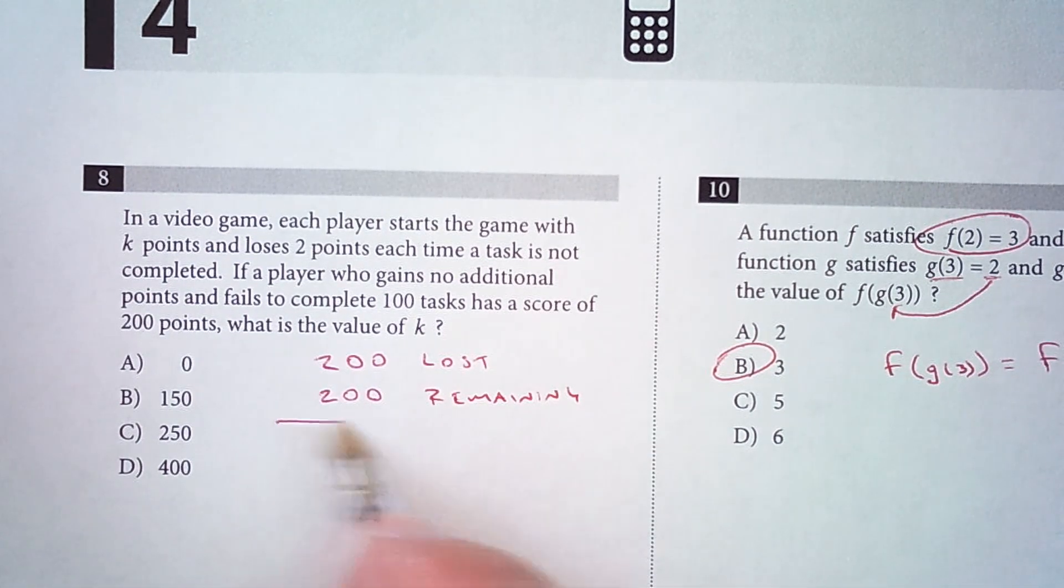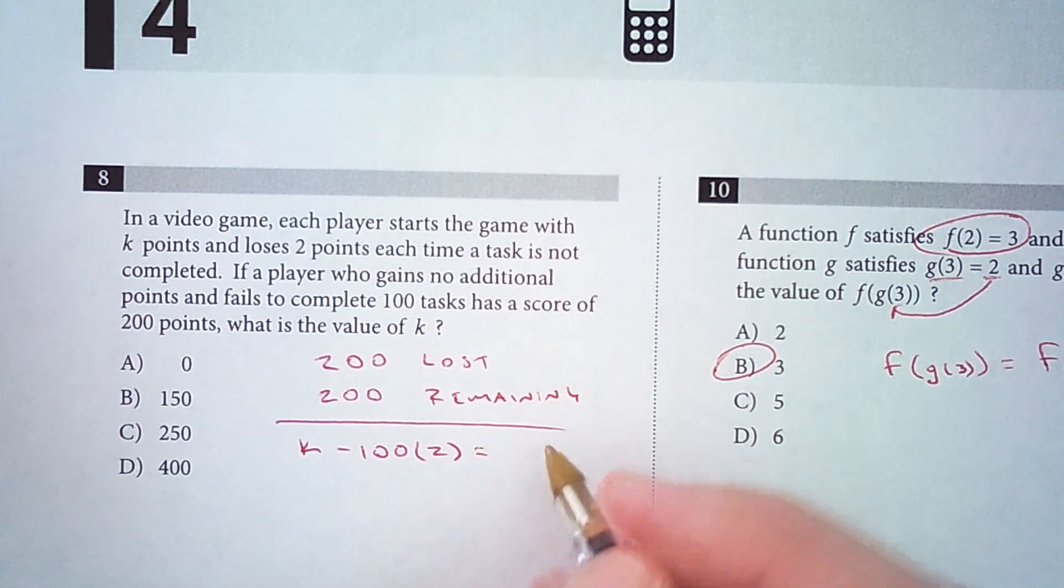Another way we could write an equation. So we have K as the initial value minus 100 incomplete tasks times 2 points each leaves us with 200 points remaining.